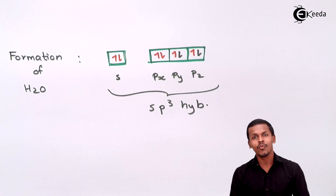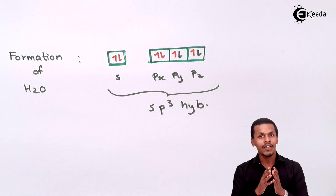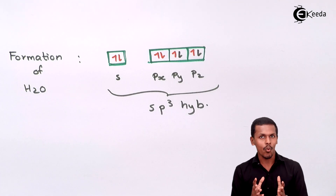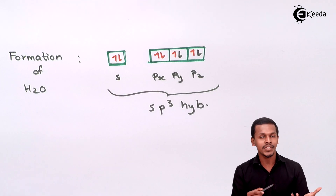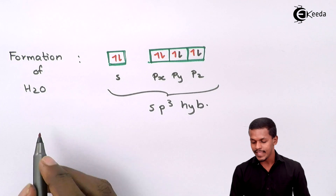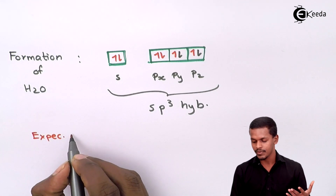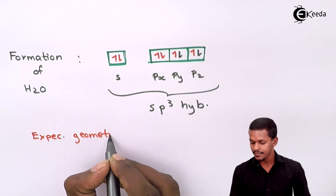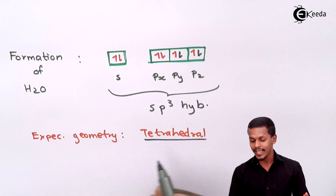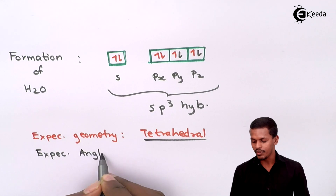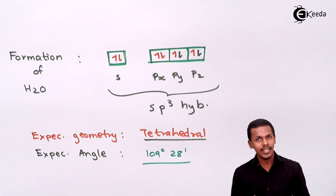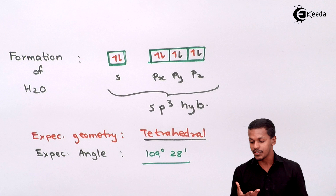If it is sp³ hybridized, then similar to methane — which gives a pure sp³ structure with a bond angle of 109°28' — what about water? Water consists of two lone pairs of electrons on the oxygen atom. These lone pairs will have an effect on the shape or modified geometry of the molecule. The expected geometry is tetrahedral, and the expected bond angle is 109°28'.